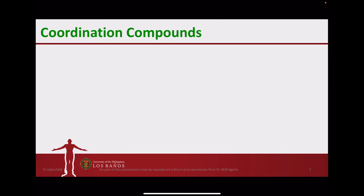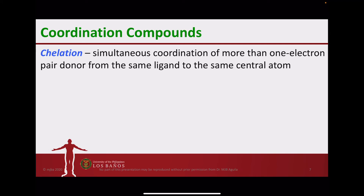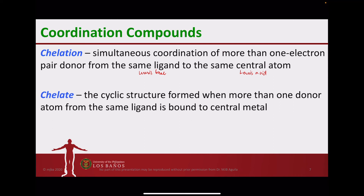When talking about polydentate ligands — bidentate, tridentate, hexadentate — the process where different donor atoms simultaneously coordinate and bond to the central metal is referred to as chelation. The formation of a coordination compound complex is treated as a Lewis acid-base reaction, where the central metal atom is the Lewis acid and the donor atom in the ligand is the Lewis base, donating an electron pair to the central atom. When a polydentate ligand simultaneously forms bonds to the central atom, a cyclic structure is formed, referred to as a chelate.